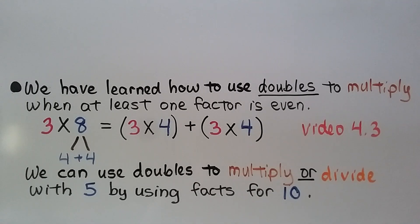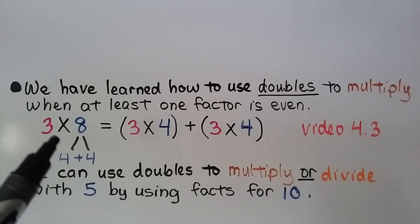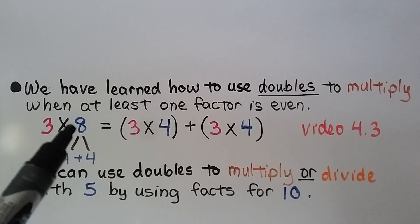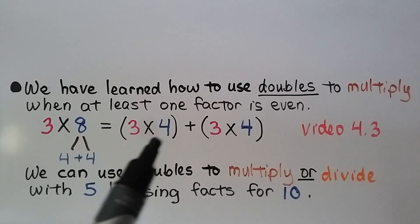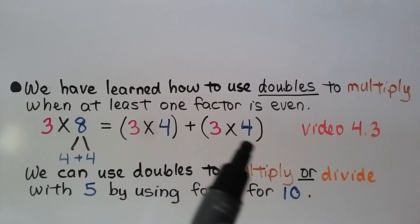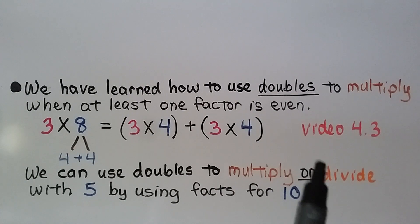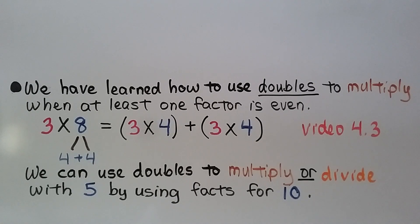We have learned how to use doubles to multiply when at least one factor is even. For example, 3 times 8 — since 8 is even, we can break it into doubles of 4 plus 4, and multiply 3 times 4 plus 3 times 4. We can use doubles to multiply or divide with 5 by using facts for 10.